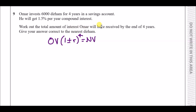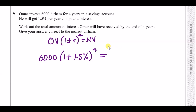The question asks for the total interest Omar received by the end of four years. Plugging in the values: original value is 6,000, rate is 1.5% so we use plus (increasing), and raise to the power of 4. Put this in your calculator: 6000 × (1.015)⁴ gives approximately 6,358.18.